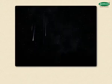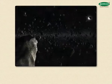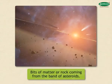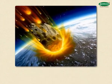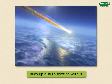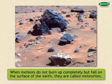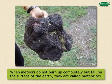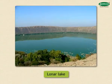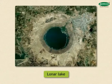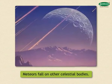Meteors. Sometimes we see a star falling from the sky. It is called a meteor. Many times, these meteors are bits of matter or rock coming from the band of asteroids. When they enter the Earth's atmosphere, they burn up due to friction with it. Sometimes meteors do not burn up completely but fall on the surface of the Earth. They are called meteorites. The Lonar Lake in Maharashtra has formed in a depression created by the impact of a meteorite. Meteors fall on other celestial bodies too.